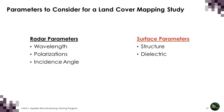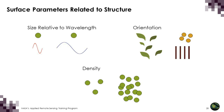Now we'll discuss surface parameters — the parameters in the surface that influence the signal: dielectric properties and structure. There are three parameters related to structure: density, size relative to wavelength, and orientation. The size of your structure determines whether the surface is rough or smooth — smooth surfaces appear darker and rough surfaces appear brighter. Density of the scatterers influences the strength of the signal, making for a stronger signal when scatterers are closer together.